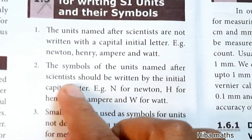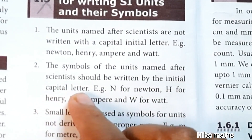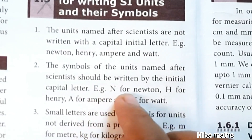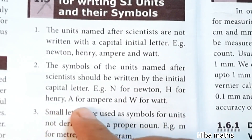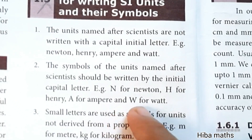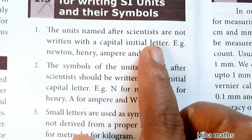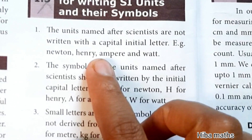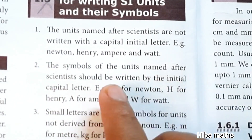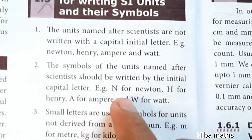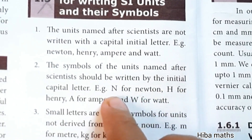Second point: the symbols of the units named after scientists should be written with the initial capital letter. For example, capital N for Newton, H for Henry, A for Ampere, and W for Watt. If a scientist has given a unit, the first letter of the symbol is capital. But the symbol of a unit that is not his name is not written in capital.